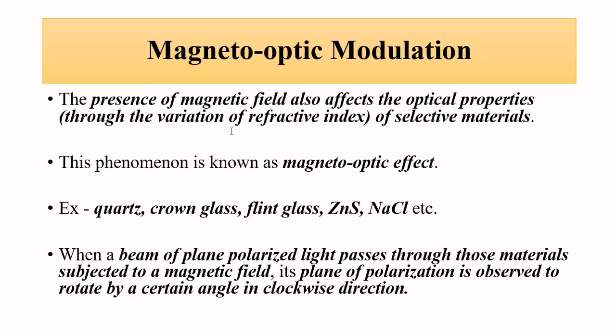The magneto-optic modulation involves the presence of an external magnetic field which affects the optical properties of selective materials depending on a certain constant. Similar to how the Pockels and Kerr constants — the linear and quadratic electro-optic coefficients — came into play in electro-optic modulation, here another constant applies: the magneto-optic coefficient, also called the Verdet constant. Depending on this constant, suitable materials are used. Commonly used materials include quartz, crown glass, flint glass, zinc sulphide, and sodium chloride.